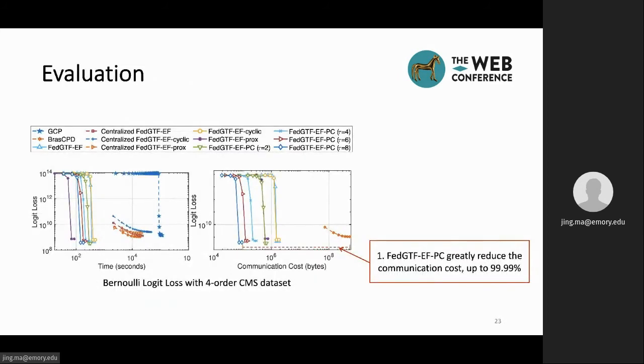We evaluate the proposed algorithms through the loss versus time and communication cost. For demonstration purposes, we only showcase the logit loss with the fourth order CMS dataset. More experiments and details can be found in the paper, which hold the same trends as this example.